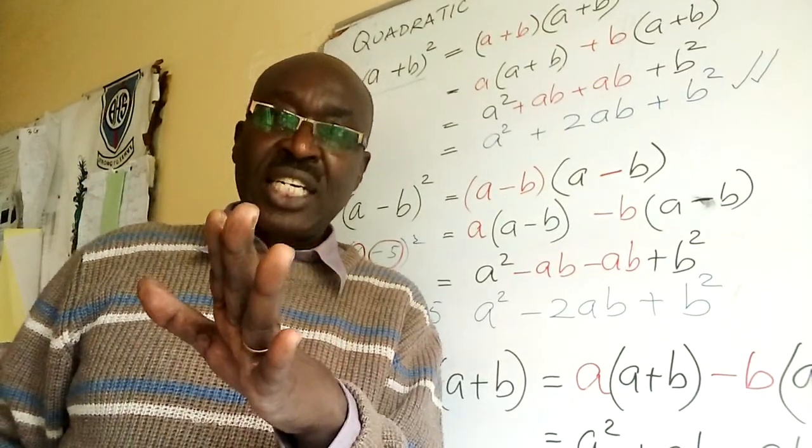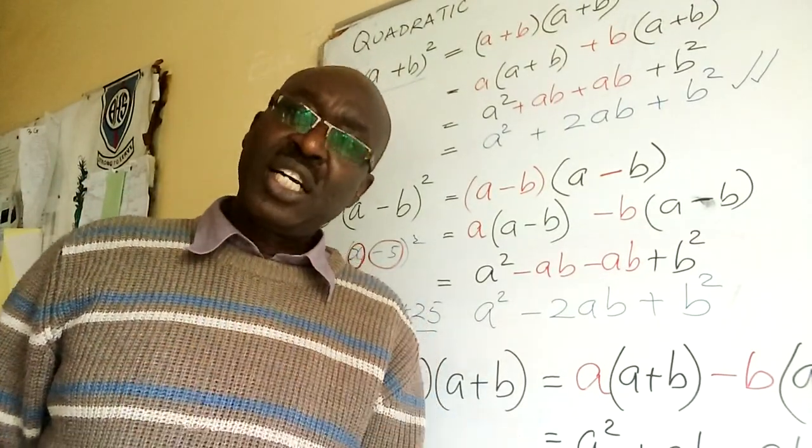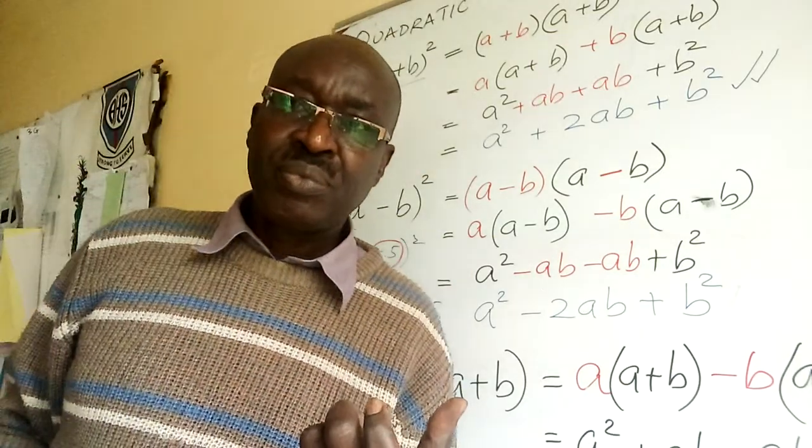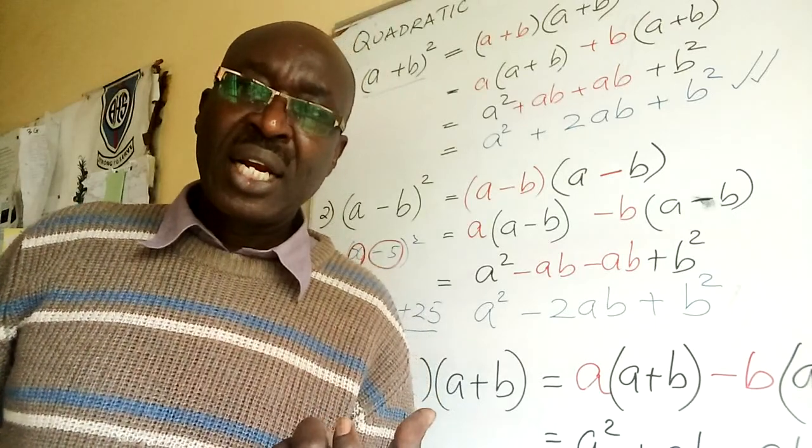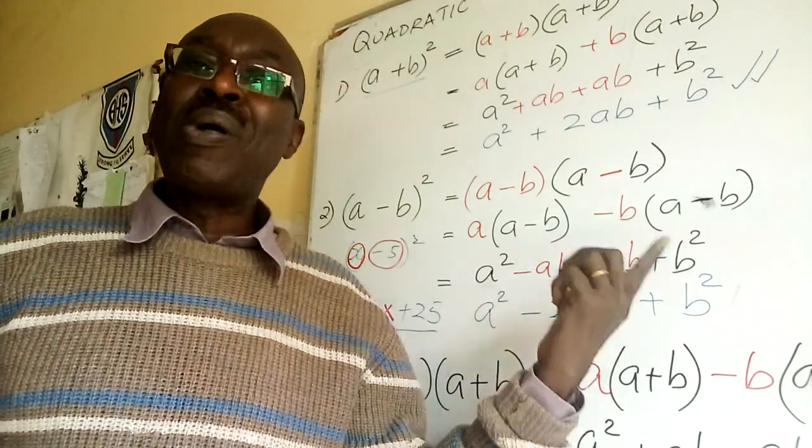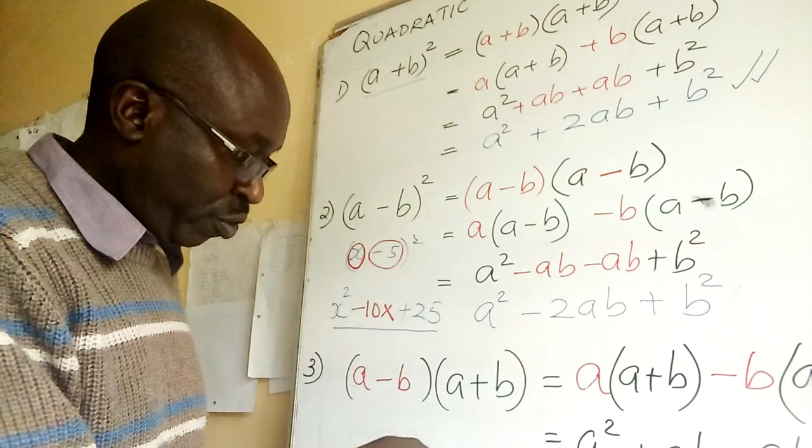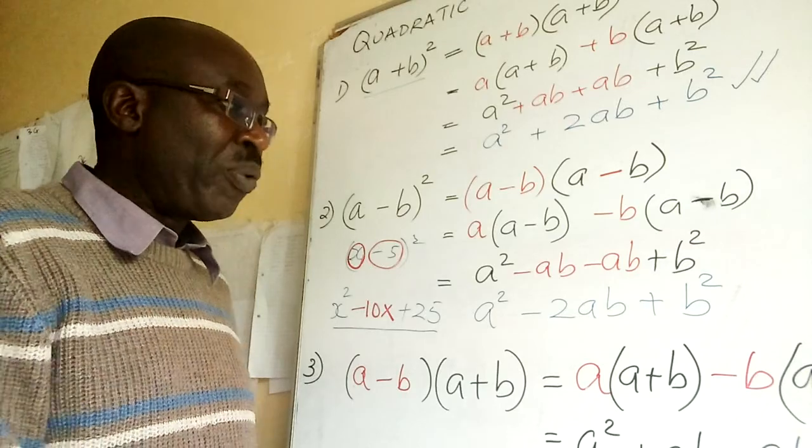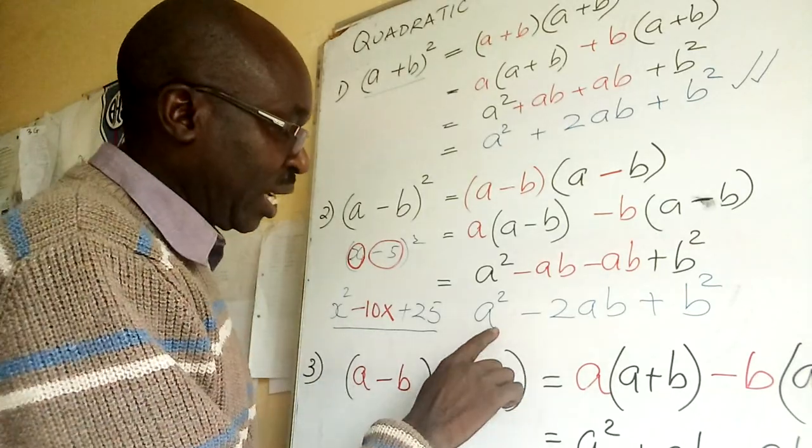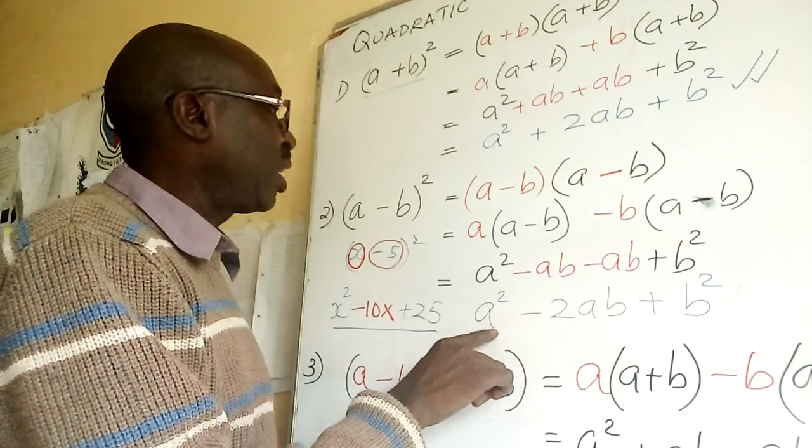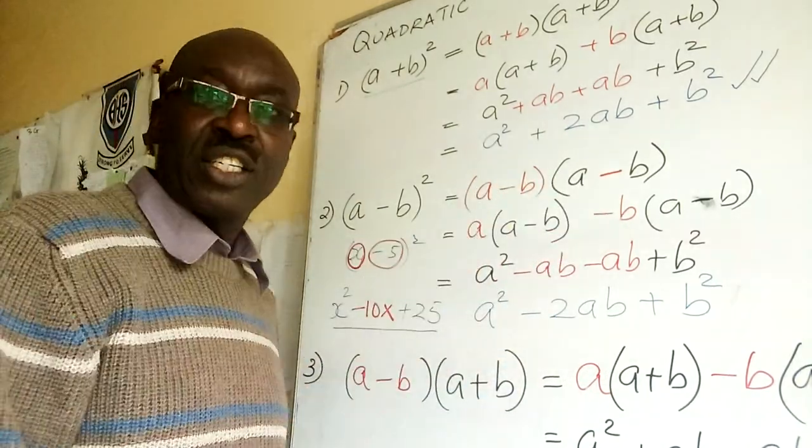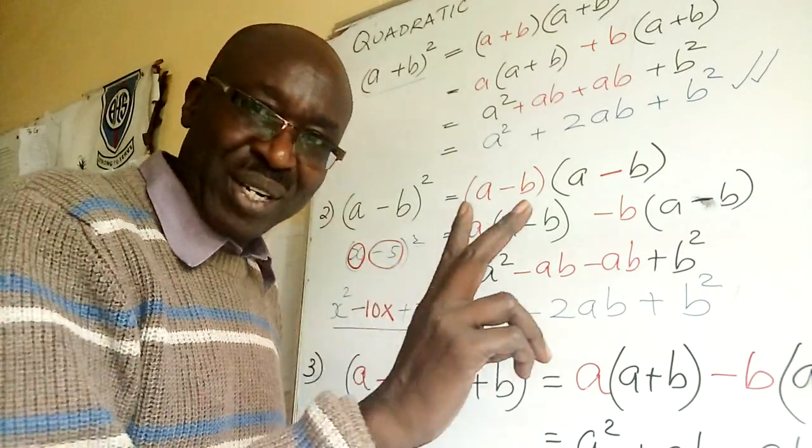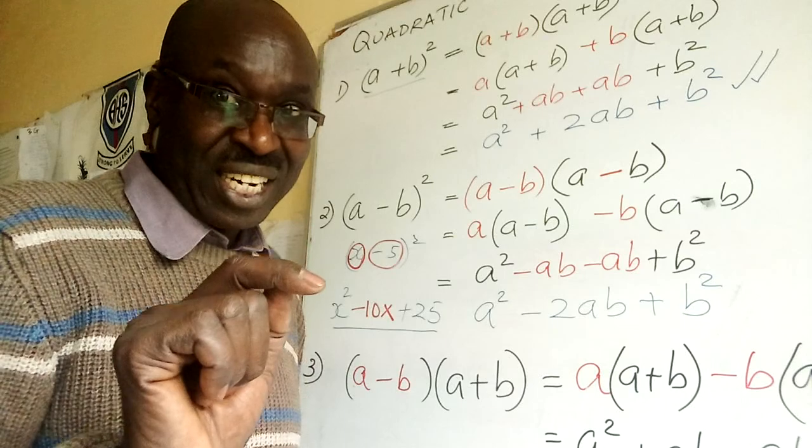Folks, these identities are very important. It is good for you to practice. Next lesson we are going to learn how to go back. If I give you factors, how do you go back? I'll give you factors, then I want you to get for me the two brackets. I'll give you expanded form then I want you to get me the two brackets. The next lesson. Bye bye.